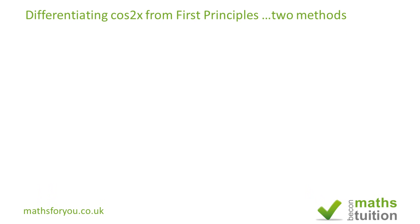Hello and welcome to this exercise on differentiating cos2x from first principles. I'm going to use two methods here. To begin with, if we say y equals cos2x, if we then increase y by a small amount delta y and increase x by an equivalent small amount of delta x, we end up with y plus delta y equals cos2 into x plus delta x.